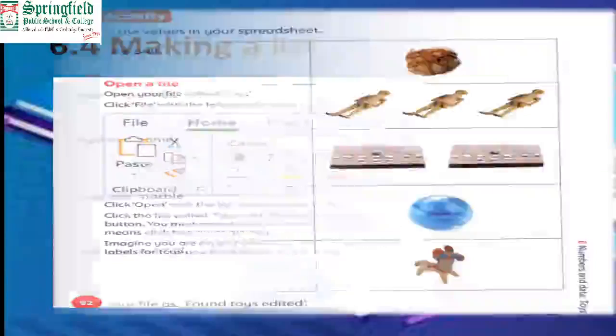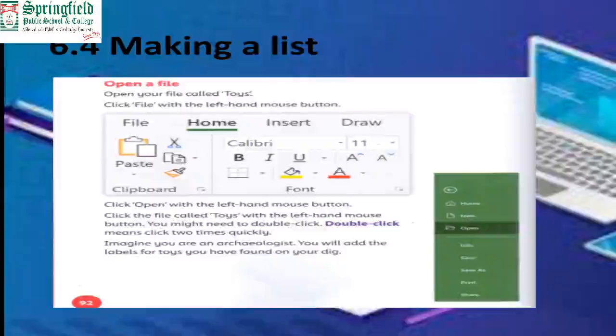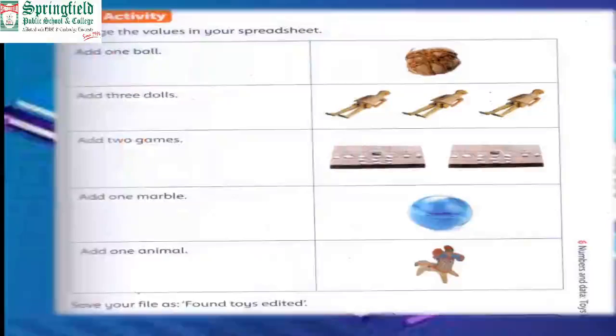How can we open it? We can press the Open button and then select the file name 'toys', and in this way our file will open in front of us. That file contains the names of the toys plus the numbers of toys.